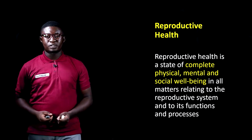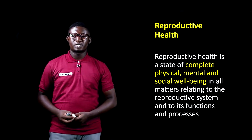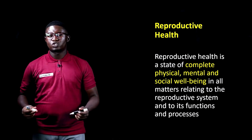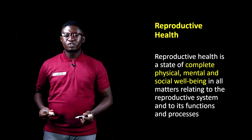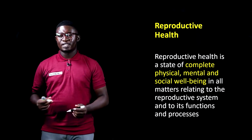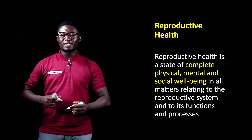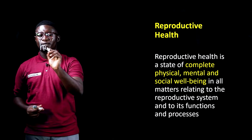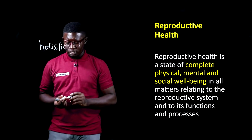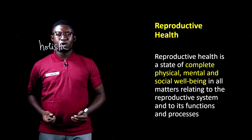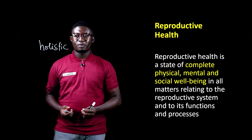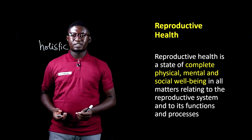When we talk about reproductive health, we are talking about a complete well-being of the physical, mental, and social attributes of the reproductive system in relation to its processes and functions. So we are talking about a holistic well-being of the social, mental, and emotional characteristics of the reproductive system in relation to its functions and processes.